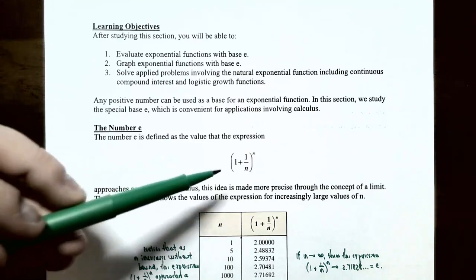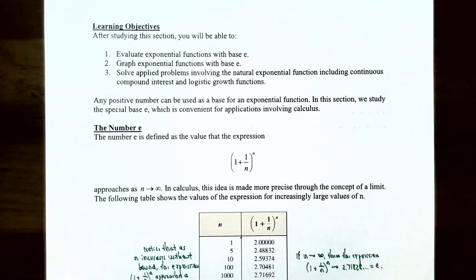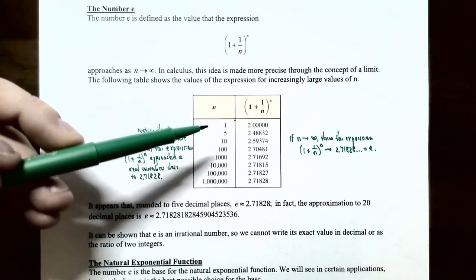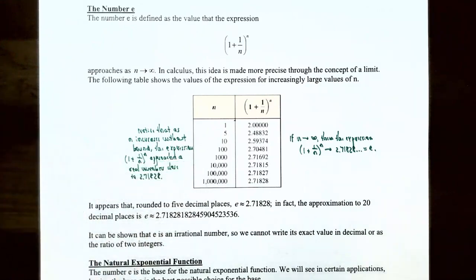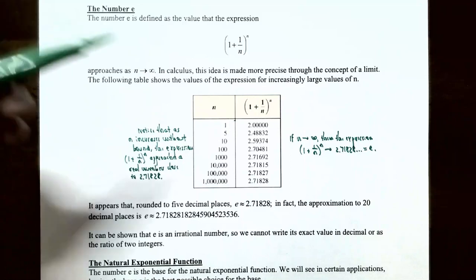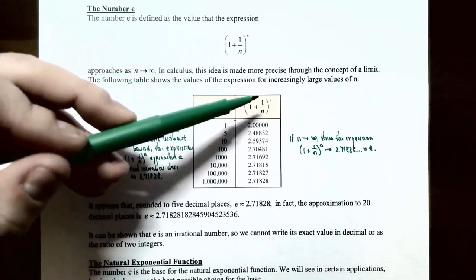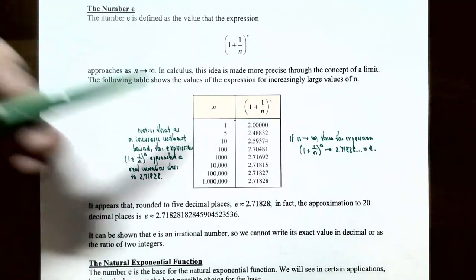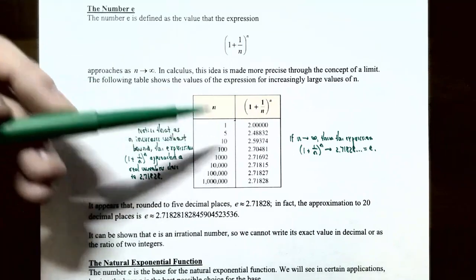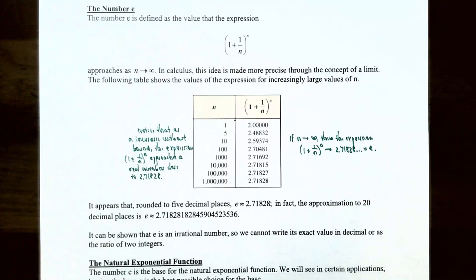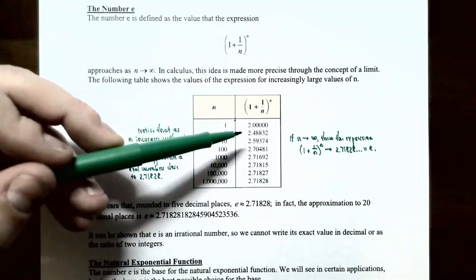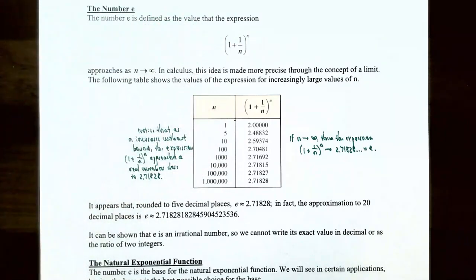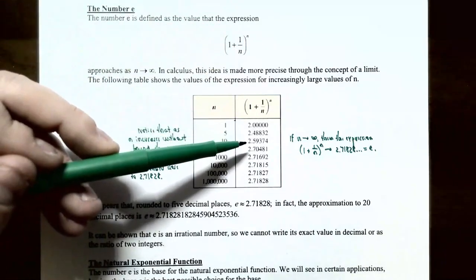The following table shows values for the expression (1 + 1/n)^n for increasingly large values of n: 1, 5, 10, 100, 1,000, 10,000, 100,000, and up to a million. When n=1 you get 2; when n=5 you get approximately 2.48832; when n=10 you get approximately 2.59374. Notice the values are increasing as n increases, but by less and less each time.